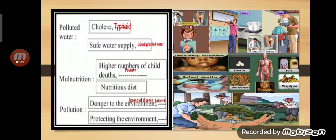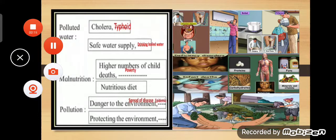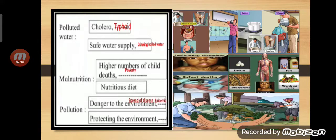The first one they have given is polluted water. Because of polluted water, you can get cholera, typhoid, jaundice — all these spread because of dirty water. So what is the remedy? You should have a safe water supply, boil the water, or filter the water.